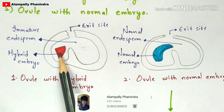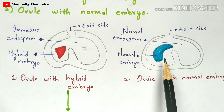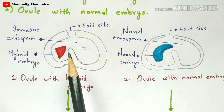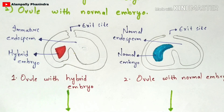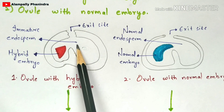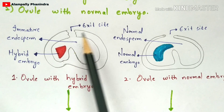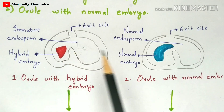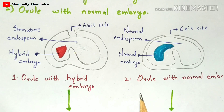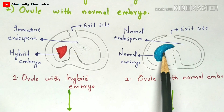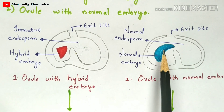In the second step, you have to extract or isolate the hybrid embryo from its ovule, and also isolate the normal embryo from the other ovule. Both embryos are isolated using the micro-injection method, where a micro-injection is inserted into the ovule via the exit site to extract the embryo. The normal embryo is then removed and set aside, as it is not used in this embryo rescue method.